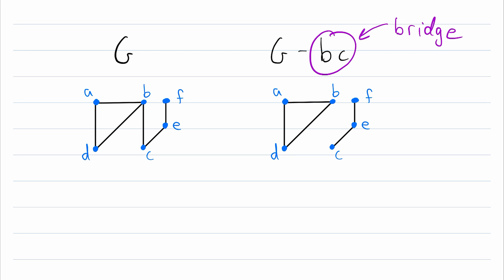Deleting an edge will only ever increase the number of components by one. If edge BC is a bridge, then G minus BC will have one component with vertex B in it and one component with vertex C in it. But just saying that an edge is a bridge if it disconnects the graph when deleted isn't really the full story — for example, deleting edge FE from this graph doesn't disconnect it because the graph is already disconnected, but edge FE is still a bridge.